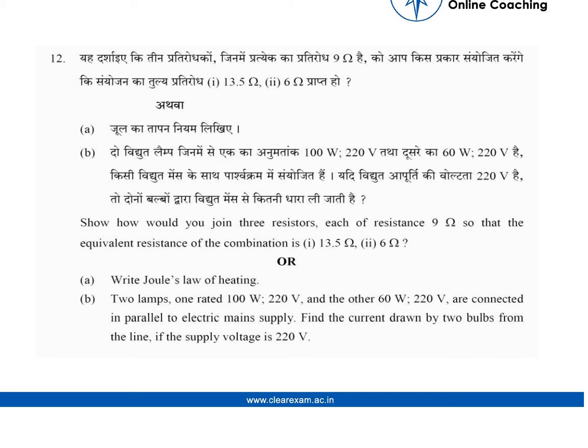Students, we would be discussing this question and its solution. The question is in two parts. First part is show how would you join three resistors each of 9 ohm so that the equivalent resistance of combination is 13.5 and 6 ohm.